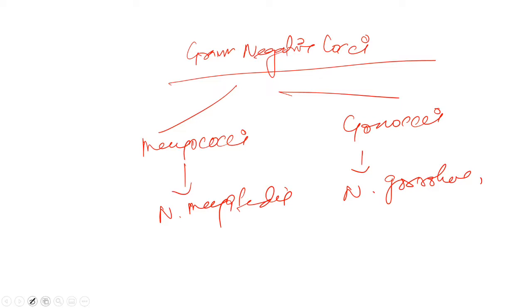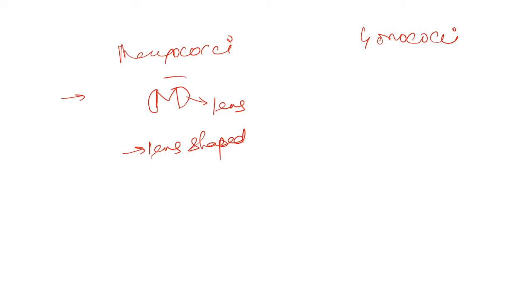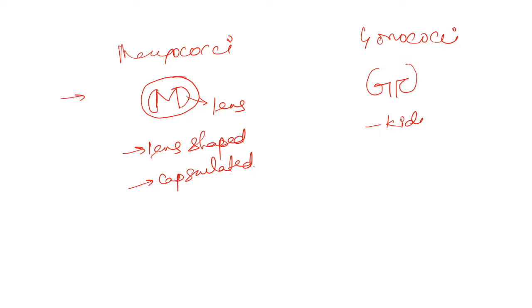Now let's learn the difference between meningococci and gonococci. For meningococci, write down an M and draw it like a lens shape — so meningococci is lens-shaped. For gonococci, write G and it looks like a kidney, so gonococci is kidney-shaped.